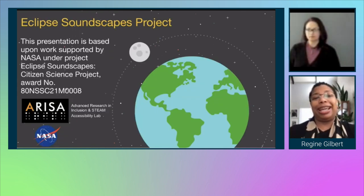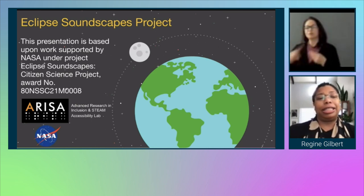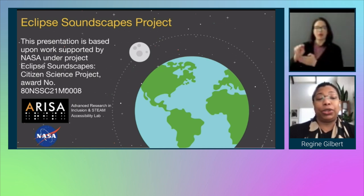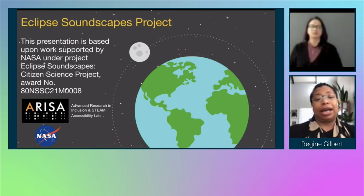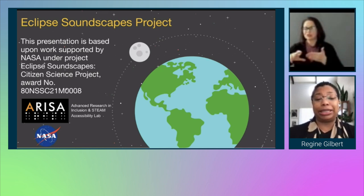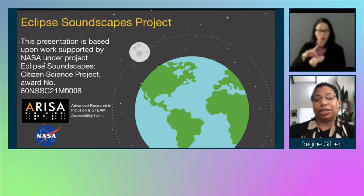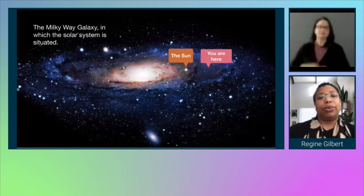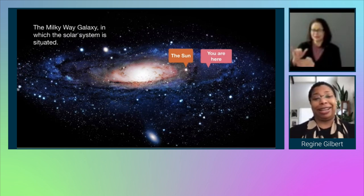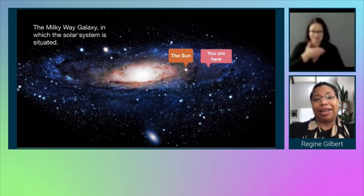I will be talking today about the Eclipse Soundscapes Project. This presentation is based upon work supported by NASA under Project Eclipse Soundscapes Citizen Science Project Award number 80NSSC21M0008 in conjunction with the Advanced Research and Inclusion and STEAM Accessibility Lab, ARISTA, and NASA. I have an image of the earth with the moon circling it, and an image of the Milky Way galaxy in which the solar system where we are sitting now is situated, with a little arrow pointing to the sun and a little arrow pointing to you here.